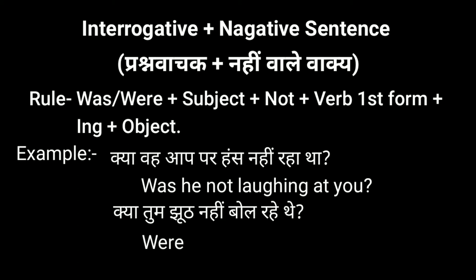Our second example: 'क्या तुम झूठ नहीं बोल रहे थे?' — 'Were you not telling a lie?' In this, 'were' is the helping verb, 'you' is the subject, 'not' is used for negation, 'telling' is the verb first form plus ing, and the rest is the object.